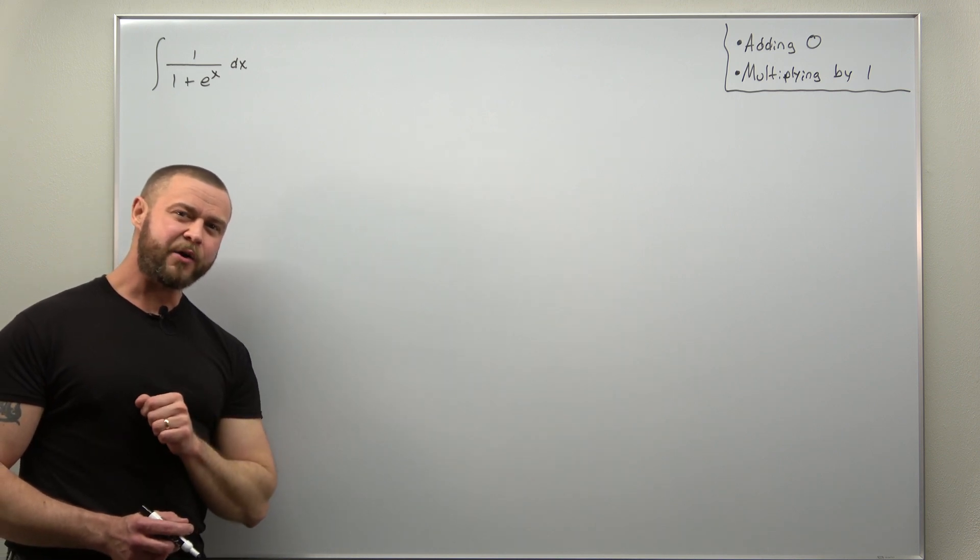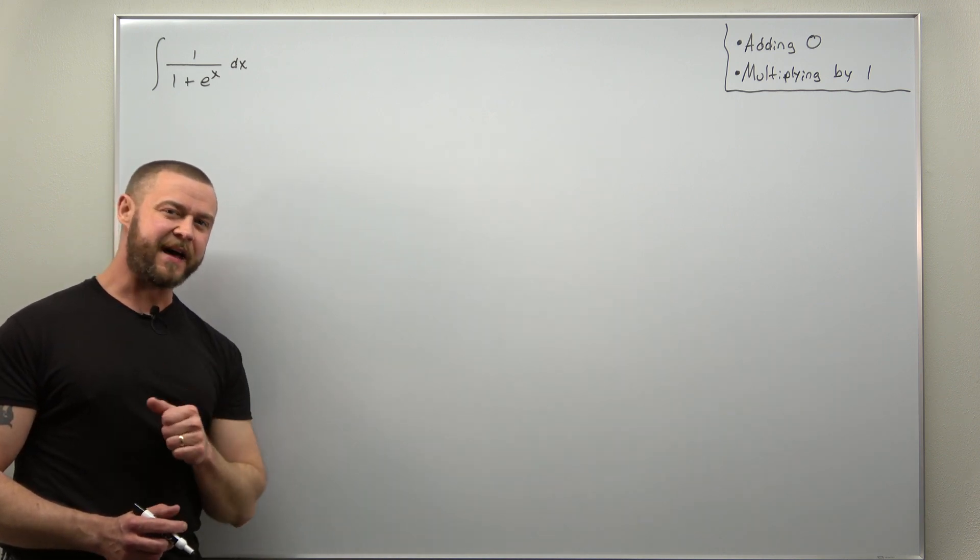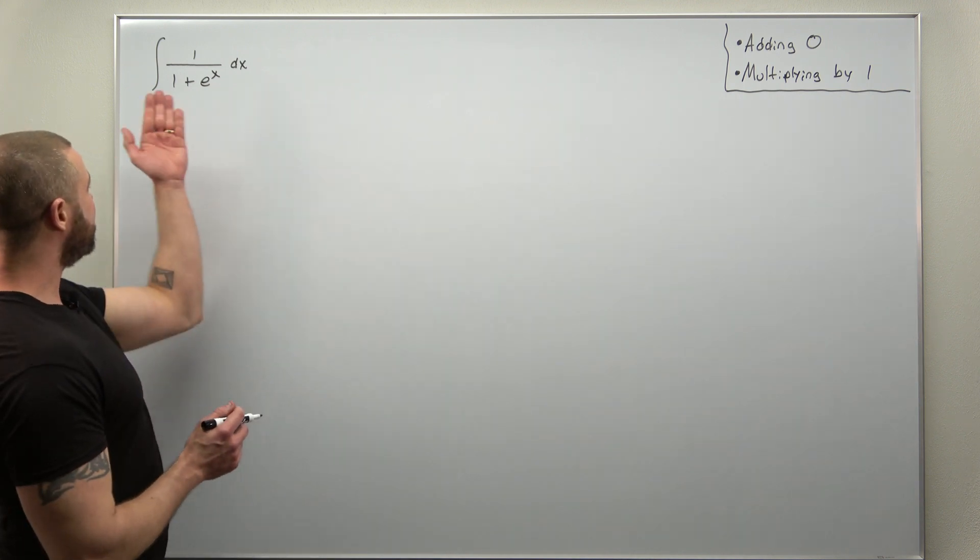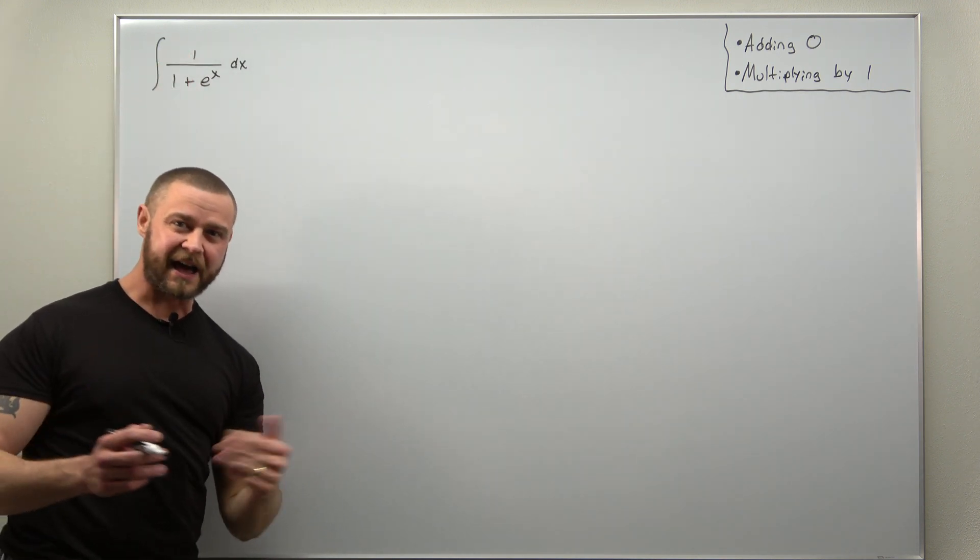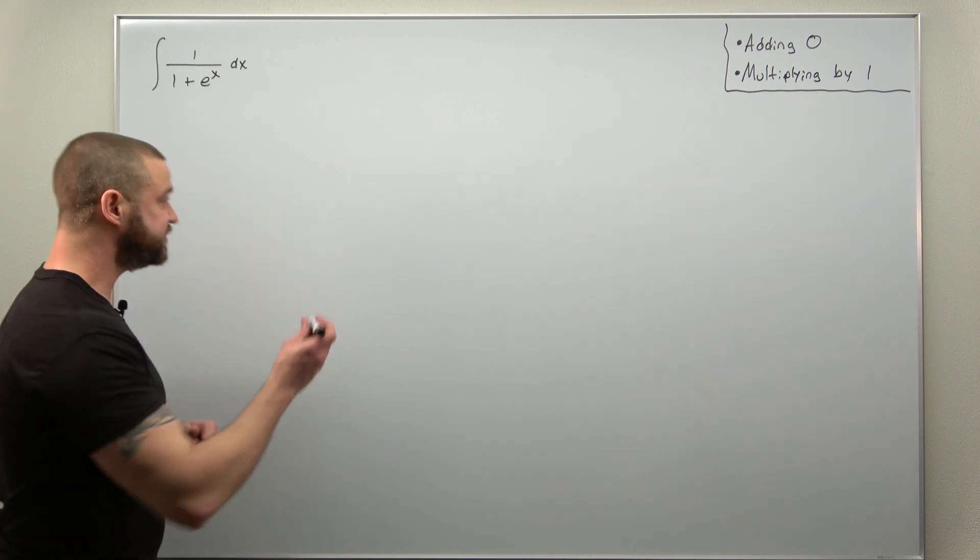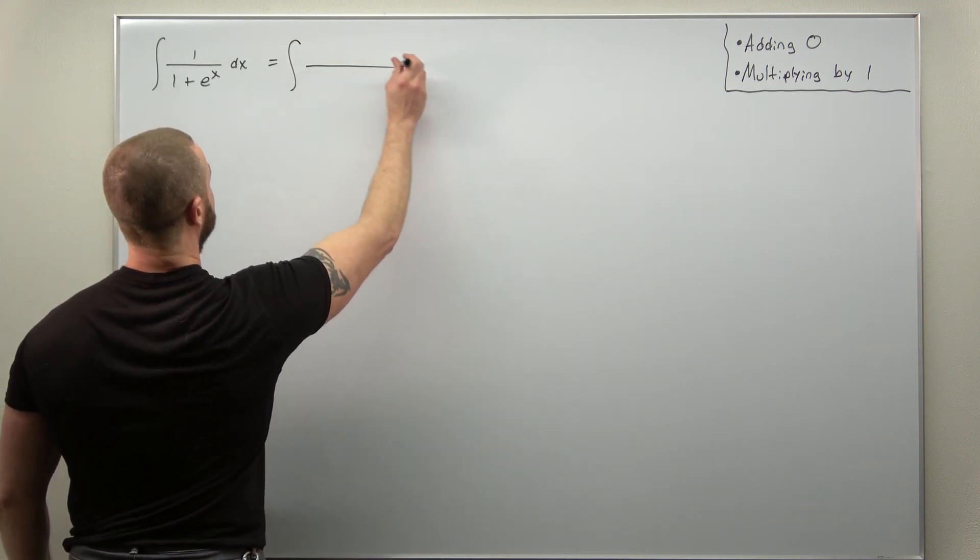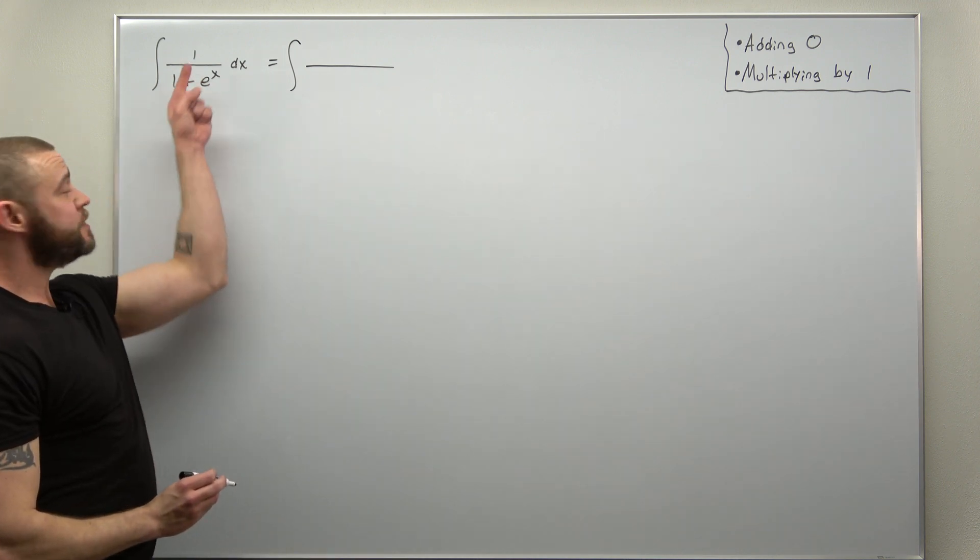All right, so what we can do is let's be a little smart and try to think ahead. I maybe want to try to incorporate and get another factor of e to the x, but I can't just put in e to the x. Well, we can add zero and I'm going to add zero in the numerator.